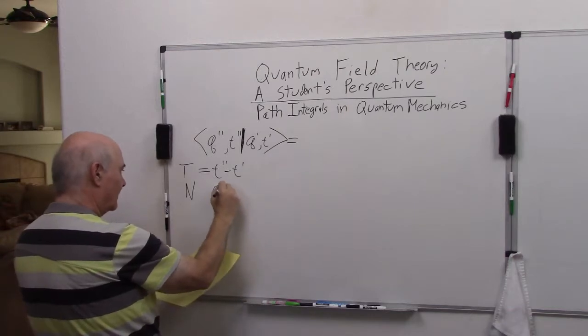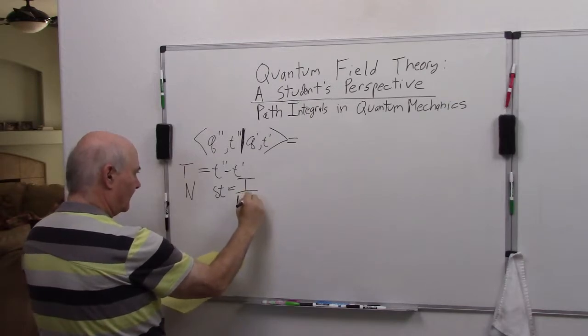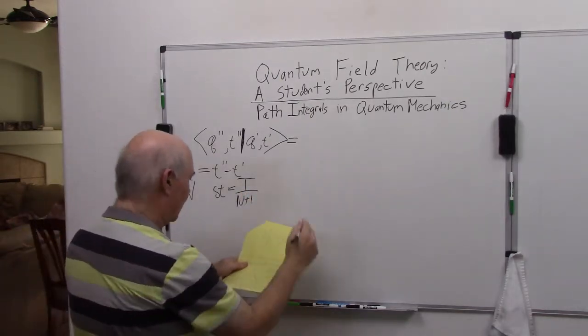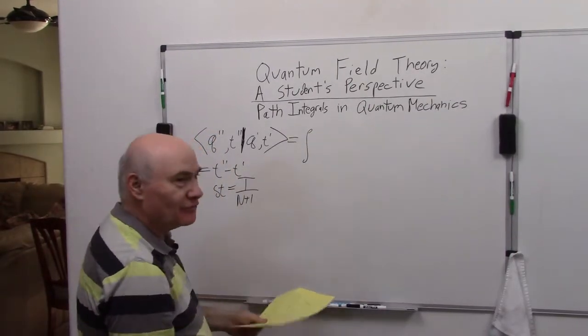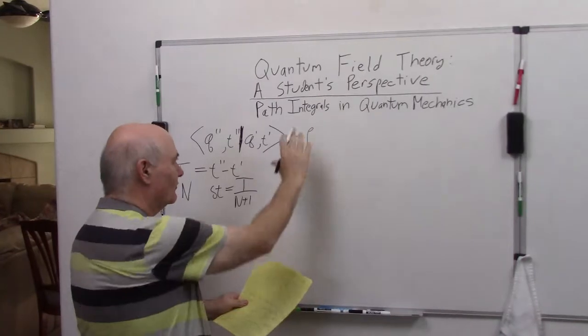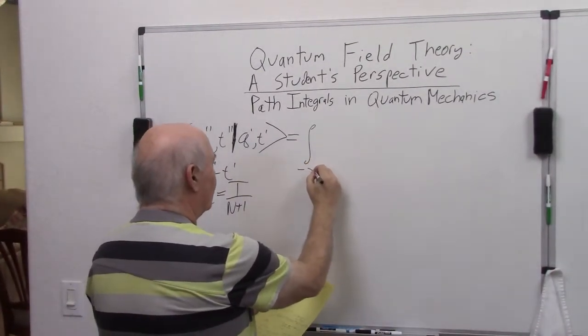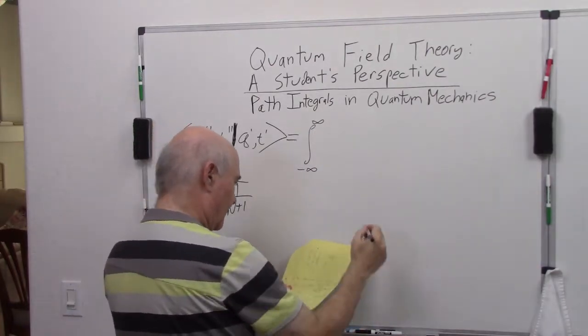Delta t equals t over n plus 1. We're going to write this as an integral. This integral is not just one integral, it's a whole slew of integrals, but I'm just going to write one integral sign and everything goes from minus infinity to infinity.